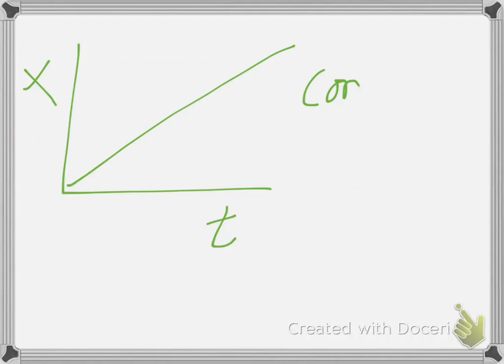So X versus time graph, we actually see that it is really, really linear. What is that telling us? That's telling us that it is constant velocity.